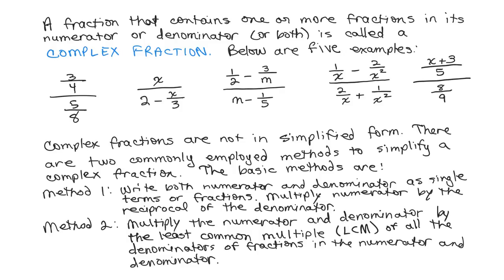In Method 2, you don't need to have the expression in the form of the first example. Instead, to simplify the complex fraction, the first step is to multiply the numerator and denominator by the least common multiple of all the denominators of all the fractions in both the numerator and the denominator.